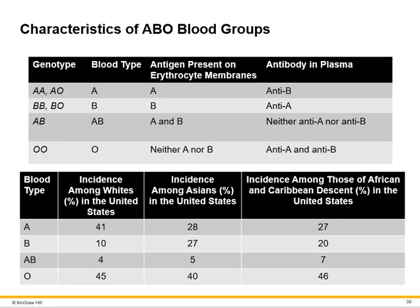I'm not going to ask you about the statistics — they're just there for your information. Just understand that Type A blood has the A antigen, Type B has the B antigen, Type AB has both A and B, and Type O blood has neither A nor B antigen.